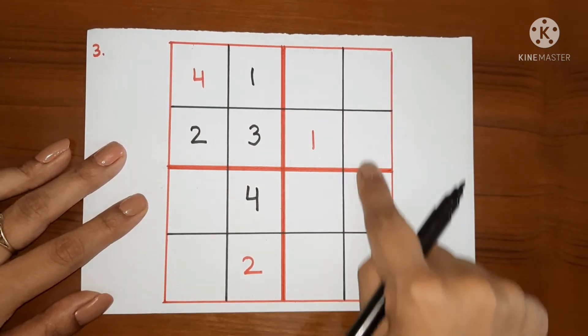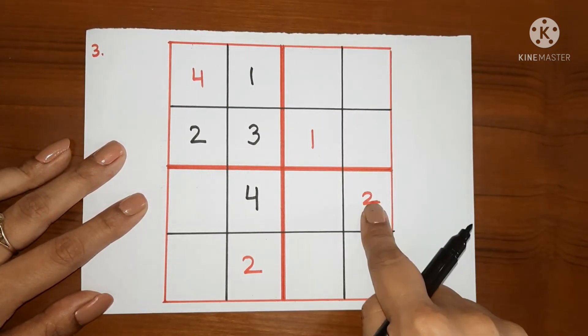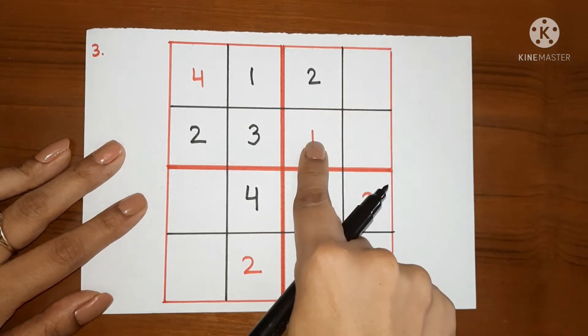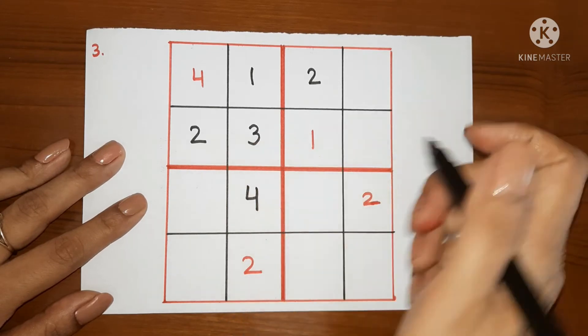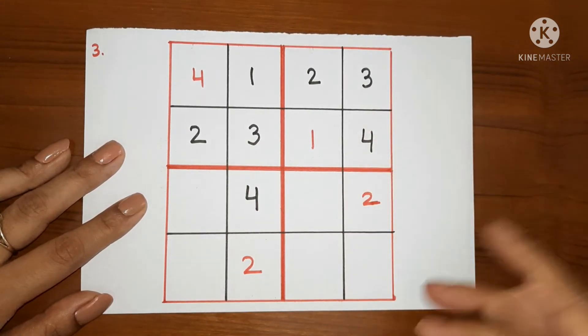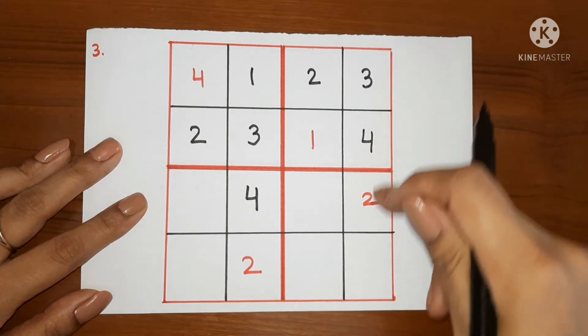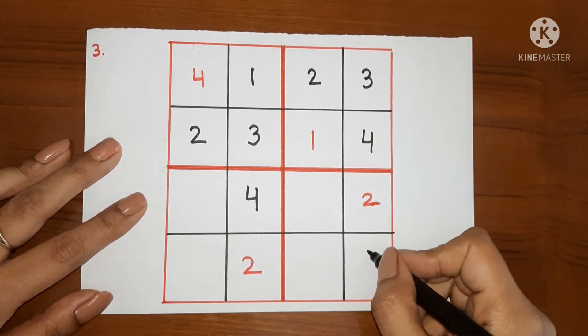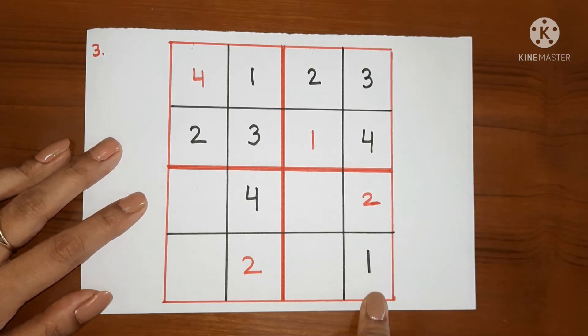1 is here. We cannot write 2 here as 2 is already there in this column. So we have to write 2 here. Again, 1, 2, 3 are here. 4 will come here and 3 will come here. This way, 2, 3, 4 are here in this column. 1 is missing. So we will write 1 here.